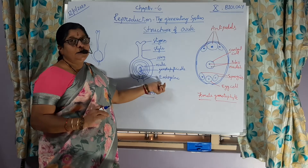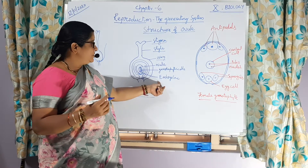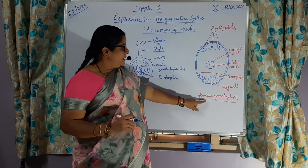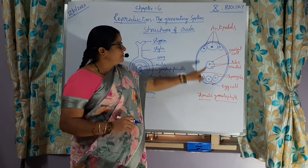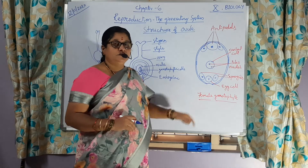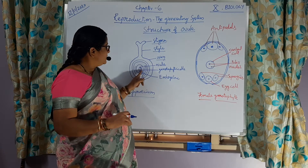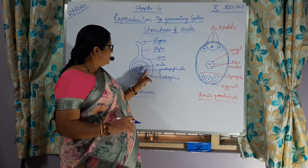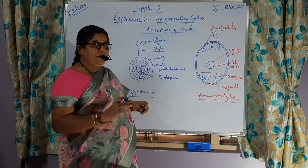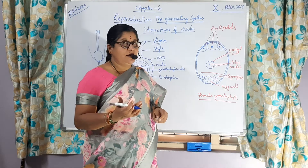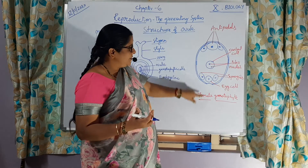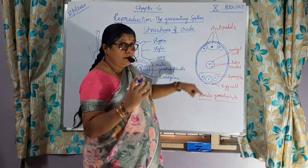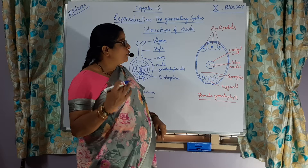This embryo sac contains food and water also stored, and groups of cells are also seen here. So, if we take only this structure — that is the female gametophyte — which is developed from the ovule. Repeated mitotic division and one meiotic division are going to occur, which helps in the formation of the female gametophyte. This female gametophyte contains three groups of cells.